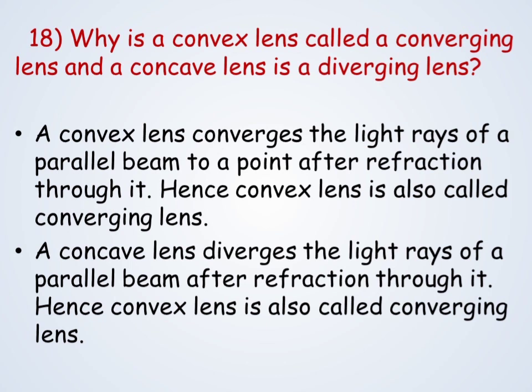A convex lens is called a converging lens whereas a concave lens is called a diverging lens, because a convex lens converges the light rays of a parallel beam to a point after refraction through it. Hence a concave lens is called a diverging lens.